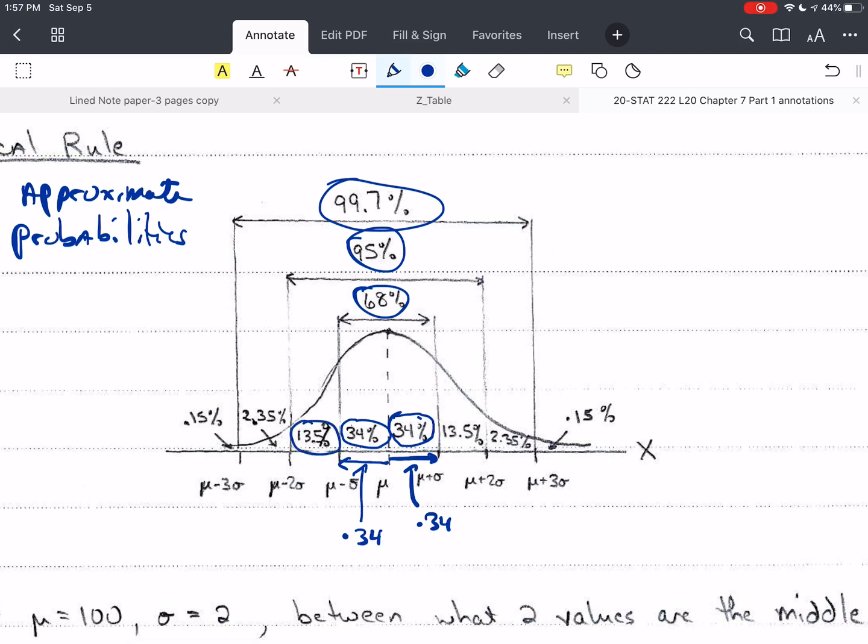Now, look at this value here, 13.5%. That's the area between two standard deviations below and one standard deviation below. And it's the same as this 13.5% over here from 1 to 2 in the positive above. And from 2 to 3 above is 2.35. And from 2 to 3 below is 2.35. And from 3 down to negative infinity is 0.15%. And from 3 above the mean, three standard deviations above the mean, to positive infinity is 0.15%. Now, this is 0.0015. So remember with your percentages to move, to add two decimal places to go to the decimal.